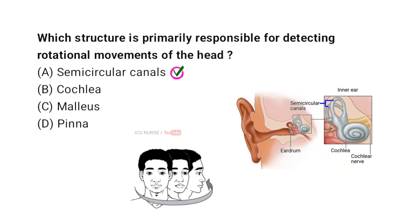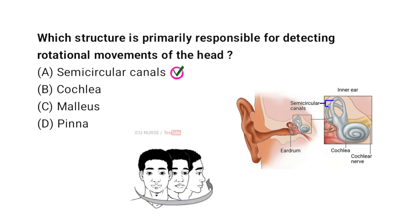The semicircular canals are structures in the inner ear responsible for detecting rotational movements of the head. There are three canals, each positioned at a different angle. Inside each canal is fluid and tiny hair cells that sense movement. When you turn your head, the fluid inside the canals shifts.